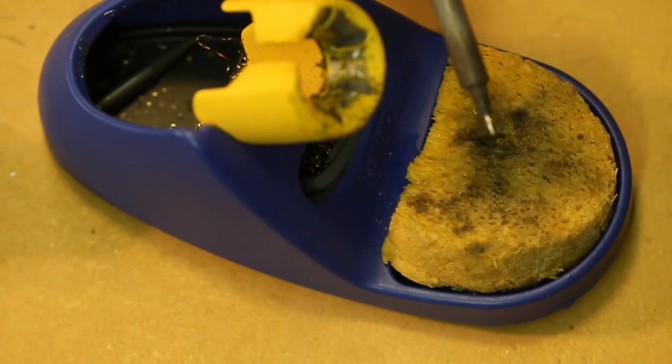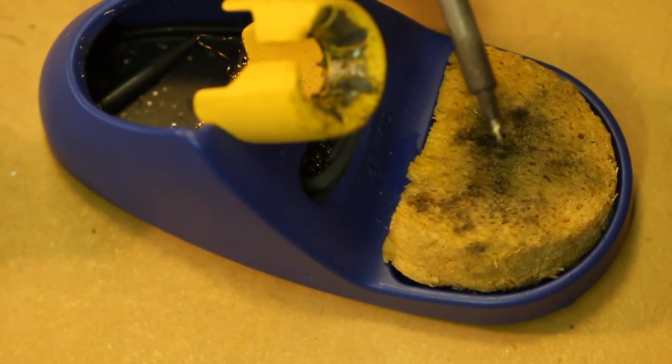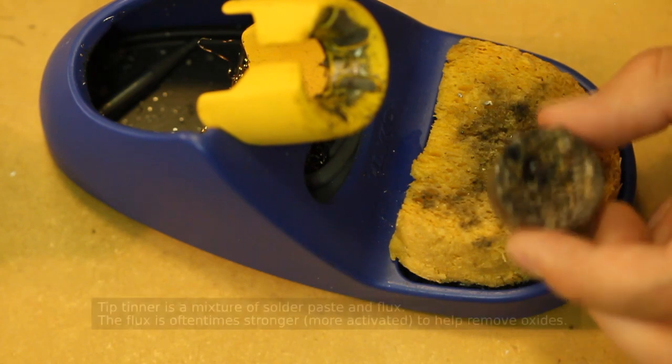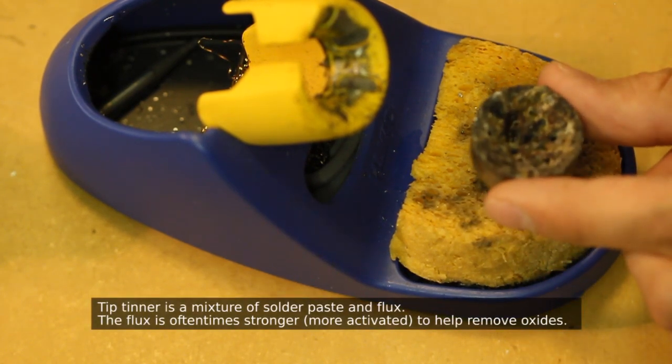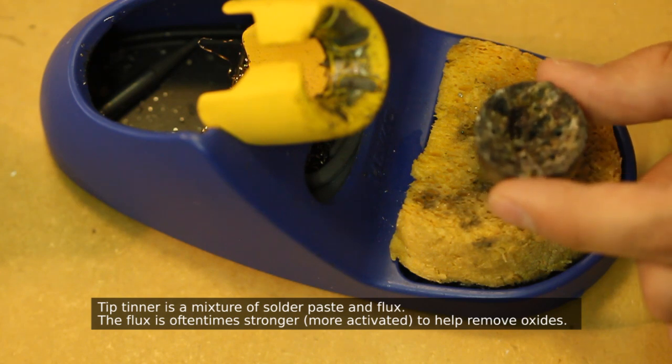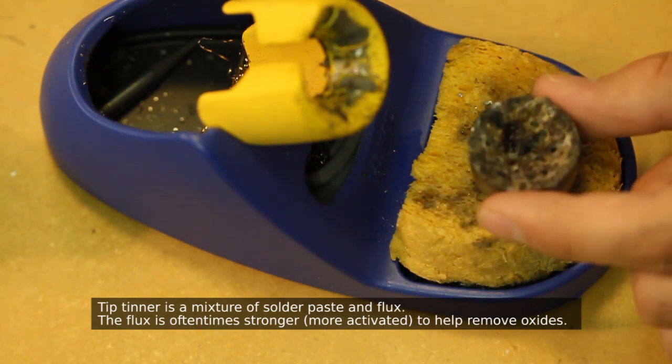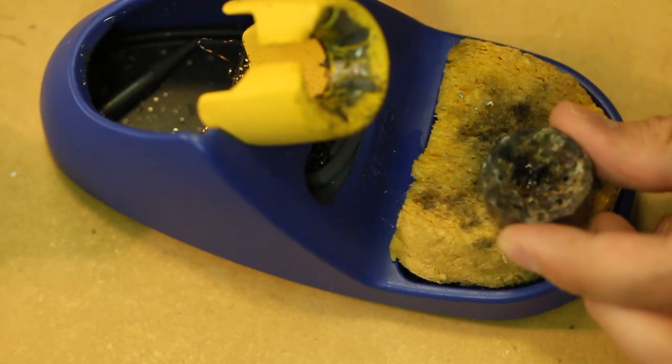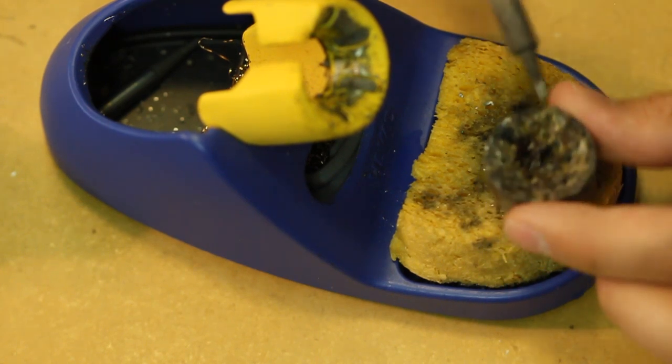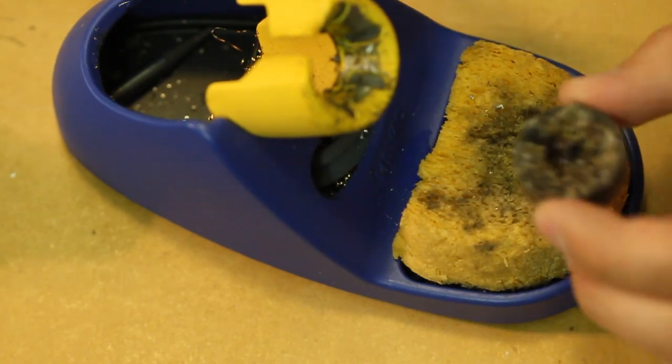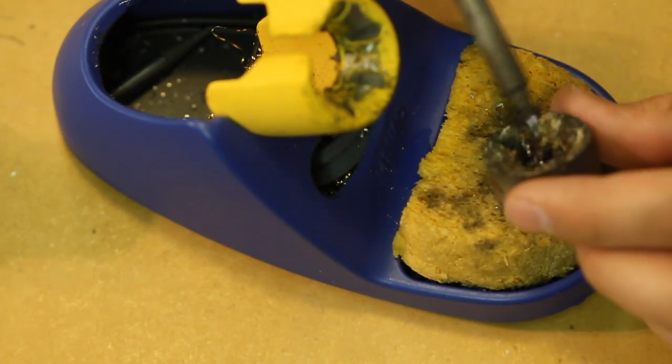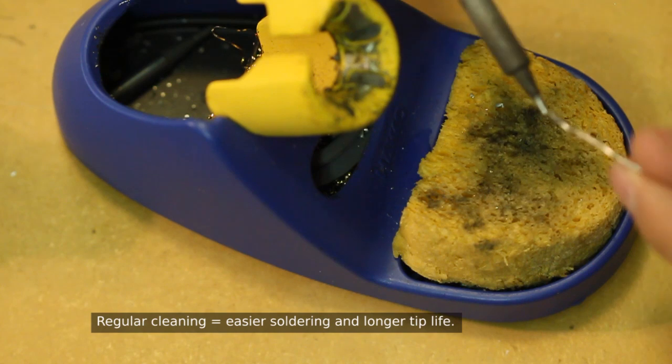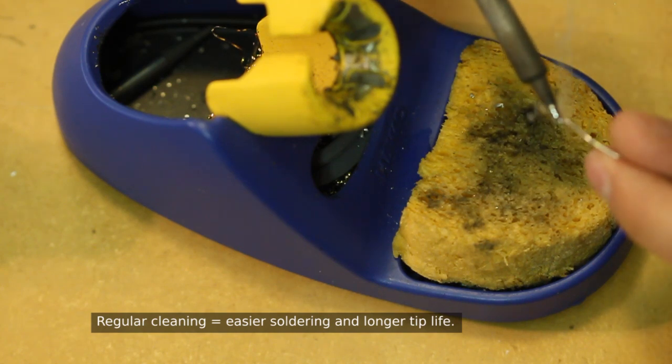And then if you ever have some corrosion that's unable to be cleaned by just putting a little bit of solder on it, we recommend using what's called tip tinner. You can get this stuff at any local electronics store, more so on the hobby electronics side. What you do is you just put your tip in there and push it around a little bit. The stronger acid inside of this can actually get all that corrosion off, and it replaces it with a little bit of solder that's mixed into this concoction. So it's important to definitely keep your tip clean so you're able to make a good solder joint in the end.